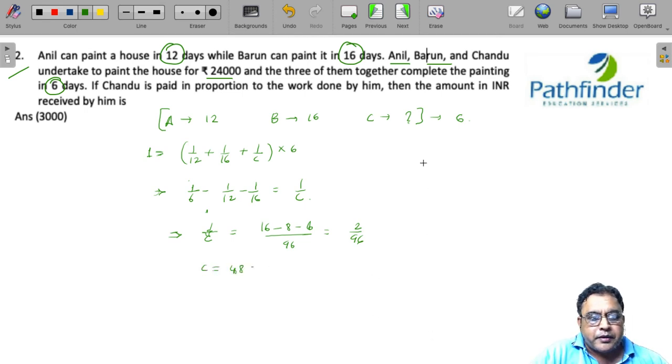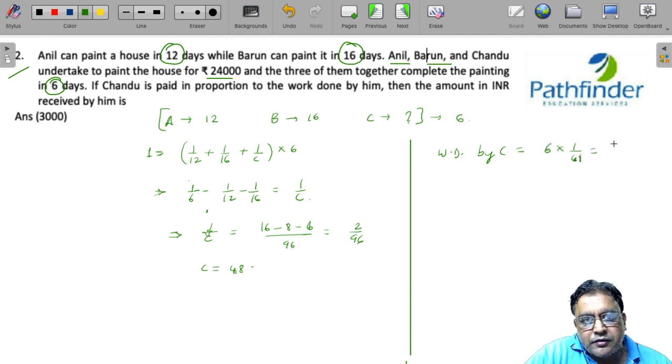Now since they are all doing the work together and C is paid in proportion to the work done by C, what fraction of the work has been done by C? So C has done work equal to 6 into the rate of C, that is 1/8. So he should be paid 1/8 of the total amount, which is equal to 1/8 of 24,000, which is 3,000 rupees. That's your answer.